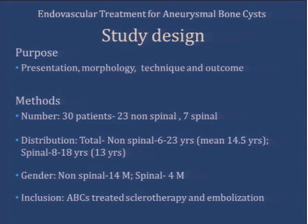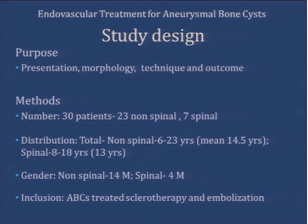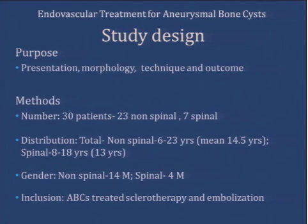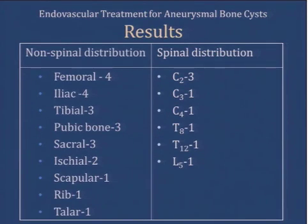We had 30 patients in total. Among these, 23 had ABCs involving non-spinal areas, while in 7 patients the aneurysmal bone cyst was affecting the vertebrae. Most of our patients were male, which was unlike the common pattern. We saw most patients in the second decade of life. All these patients underwent sclerotherapy, and a few underwent embolization. The most common location for the non-spinal group was the femur and the iliac bone, while in the spinal group, cervical lesions were more common.